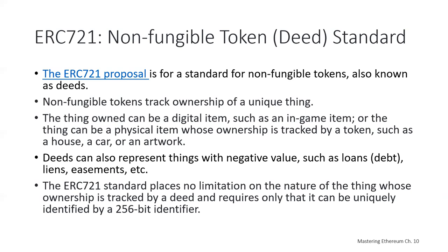We could track real estate ownership through the token, such as owning a house, a car, or artwork. DEEDs can also represent things with negative values, such as a loan, a debt, a lien, or an easement. The ERC-721 standard places no limitation on the nature of what we're tracking and requires only that it can be uniquely identified — like a social security number. All you need is some unique ID, and we use a 256-bit identifier as the unique identifier.